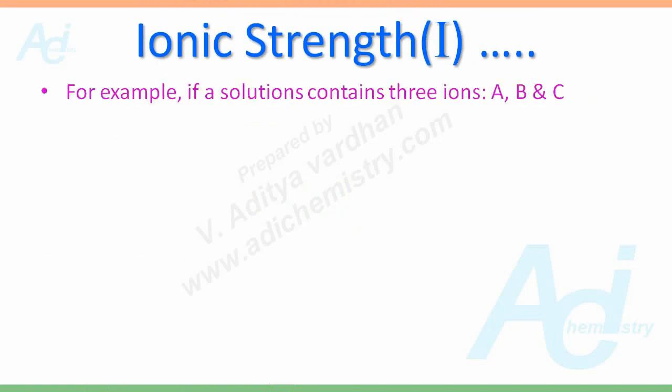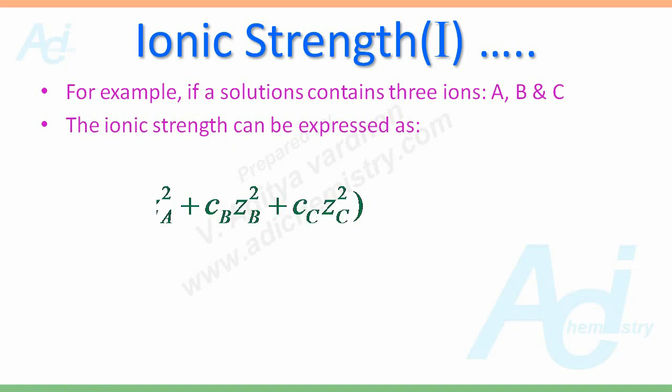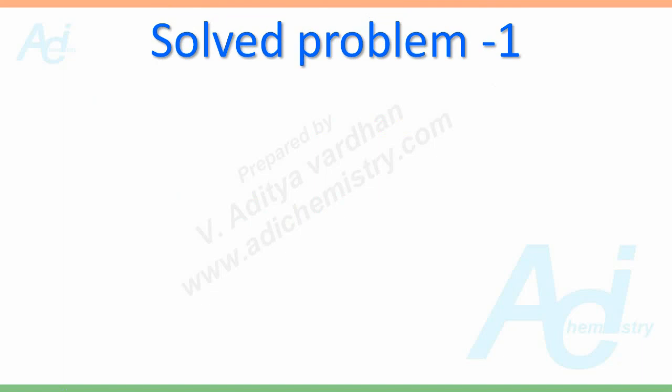For example, if a solution contains three ions A, B and C, the ionic strength can be expressed as I equals half of CAZA square plus CBZB square plus CCZC square. Now let us understand the concept through solved problems.